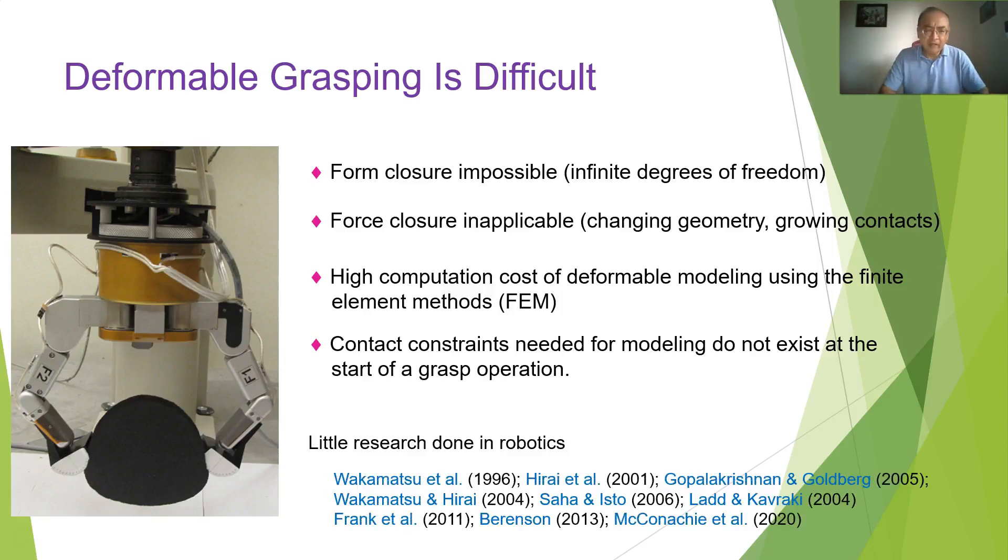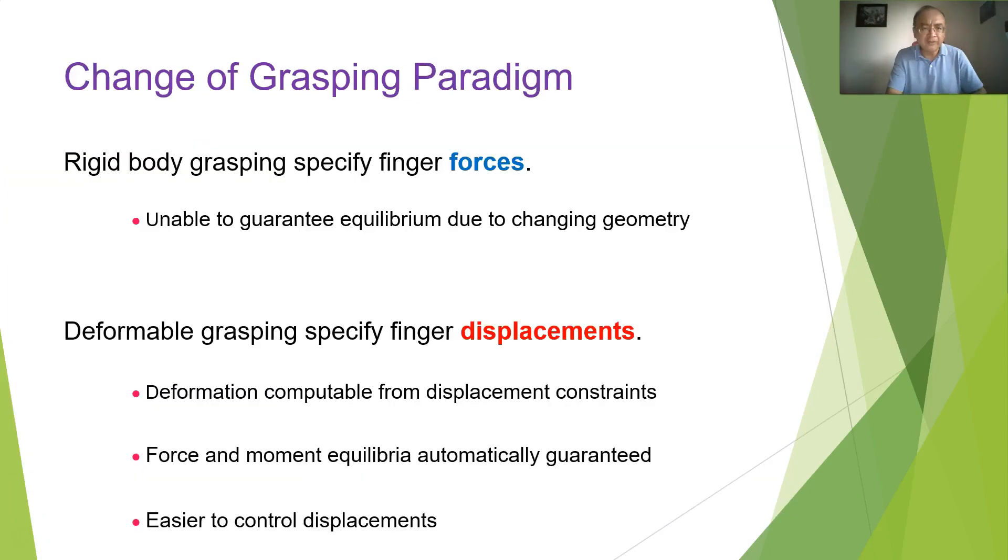There has been very little work done in robotics on the deformable grasping. Earlier work focused on linear deformable objects, which require no expensive modeling. In the recent work, especially from Berenson's group, they are trying to avoid FEM modeling. Instead, they are using global path planning, couple that with local control to do the manipulation of deformable objects.